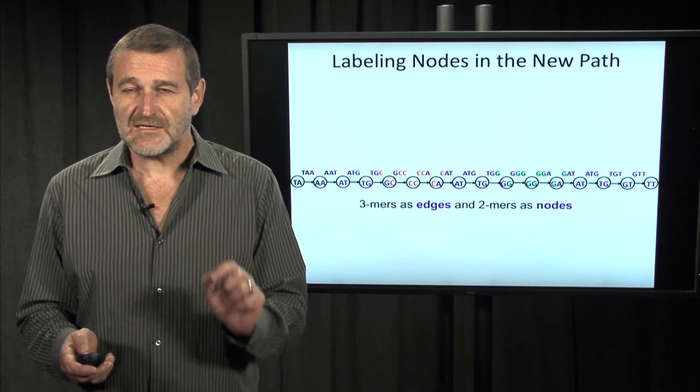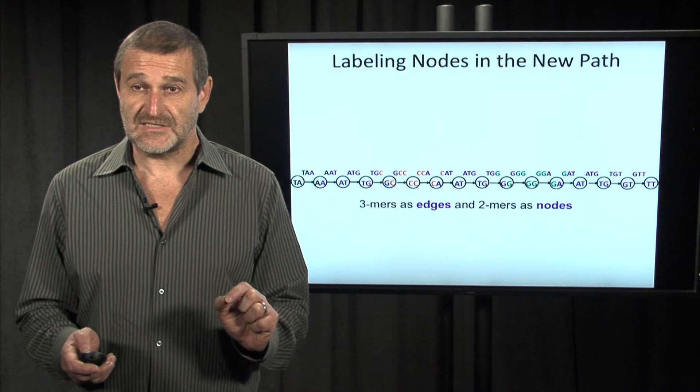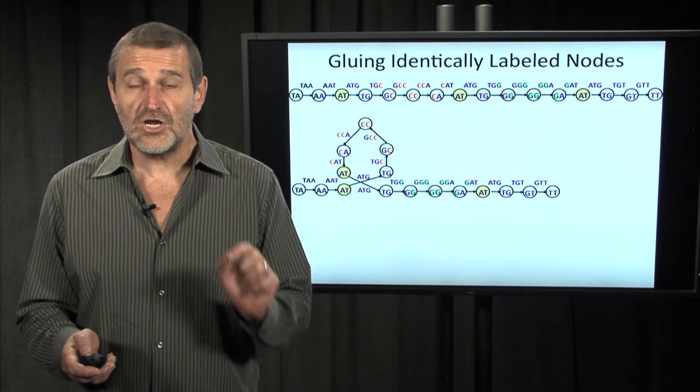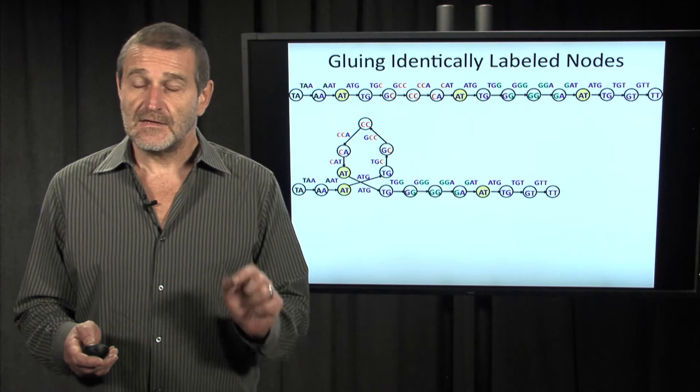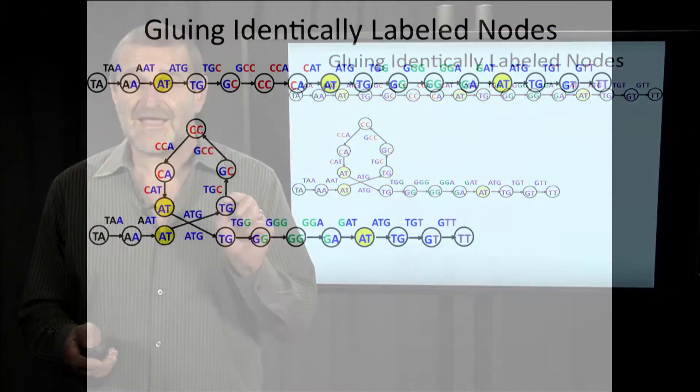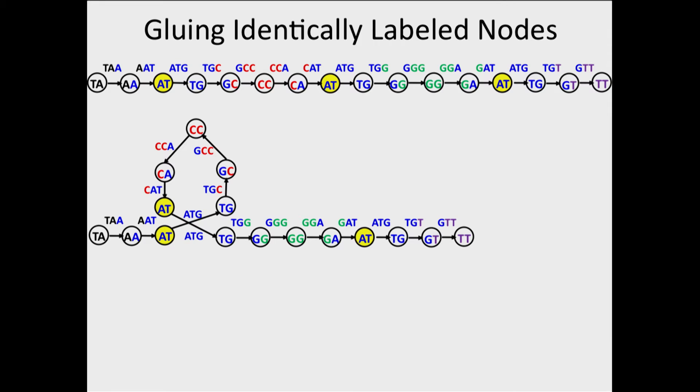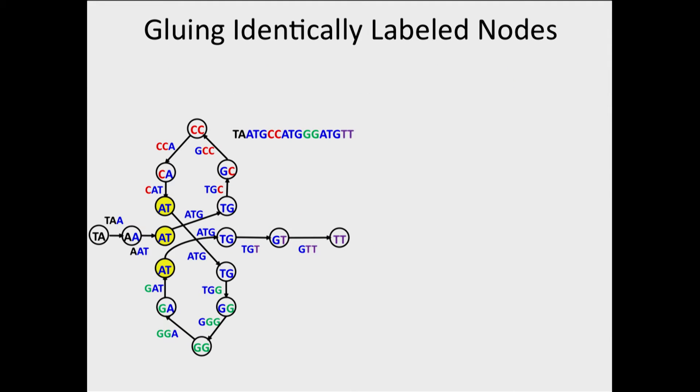And now, we'll do something very strange with this graph. Let's glue identically labeled nodes in the graph. In this graph, we have three nodes labeled AT. Let's glue them together. Let's bring two of them next to each other. And next, let's bring three of them next to each other. Let's bring them even closer to each other. And finally, they will glue in a single vertex, as shown at this slide.